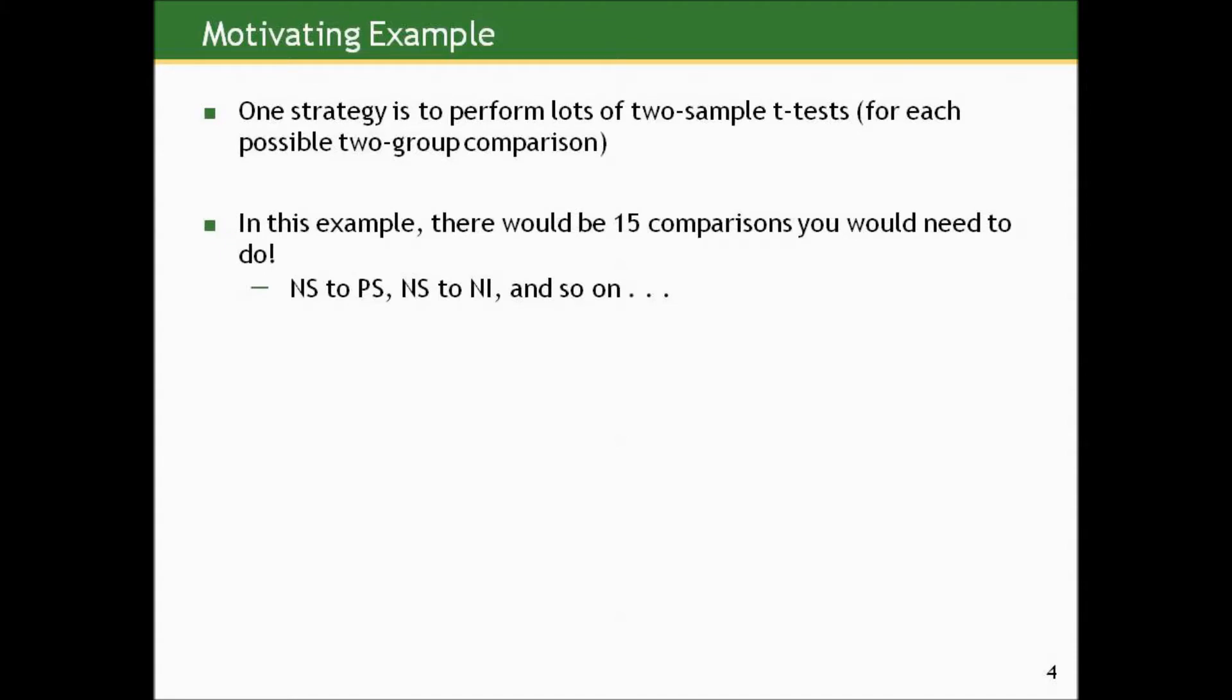You've got six groups that you want to compare means between. One strategy would be to perform a lot of two-sample t-tests for each possible two-group combination. In this example, there's six groups. Believe it or not, there would be 15 comparisons that you would need to do: non-smokers to passive smokers, non-smokers to non-inhaling smokers, and so on.